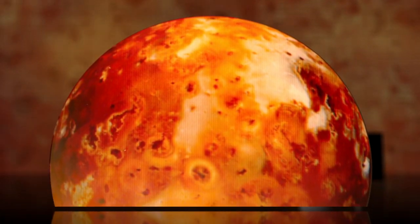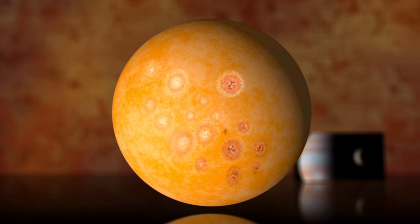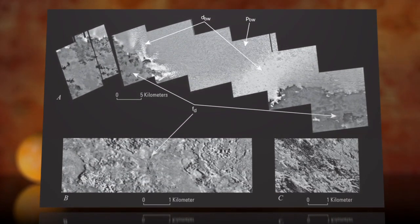The volcanism on Io is so intense that it gets completely resurfaced every million years. But the concentrations of volcanic activity aren't where scientists think they should be.